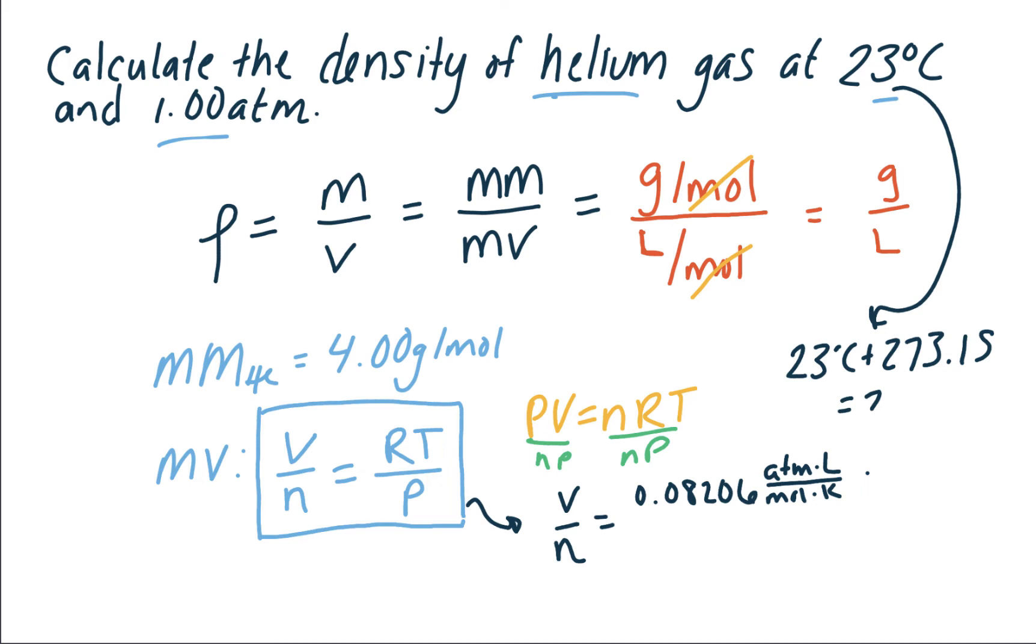We'll multiply by 296.15 Kelvin. Keep in mind that that 6 is the sig fig here, and divide by the pressure. Then let's look at the units to make sure they cancel. So atmospheres cancels and Kelvins cancel, which leaves us with liters per mole, which is what we wanted. We wanted a unit of volume per unit of moles.